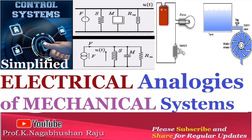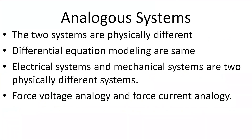Two systems are said to be analogous to each other if the following two conditions are met: the two systems are physically different, or the differential equation modeling of these systems are the same. Electrical systems and mechanical systems are two physically different systems. There are two types of electrical analogies of translational mechanical systems: force voltage analogy and force current analogy.